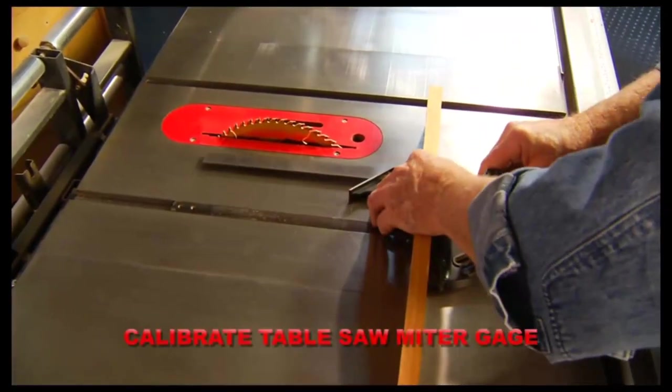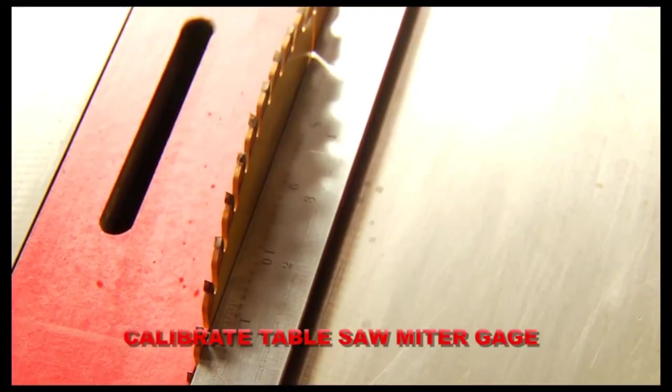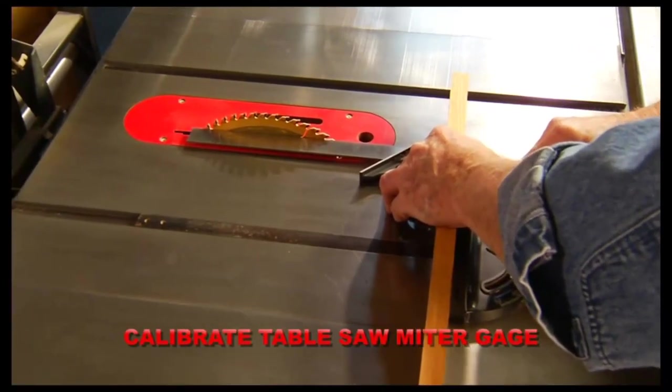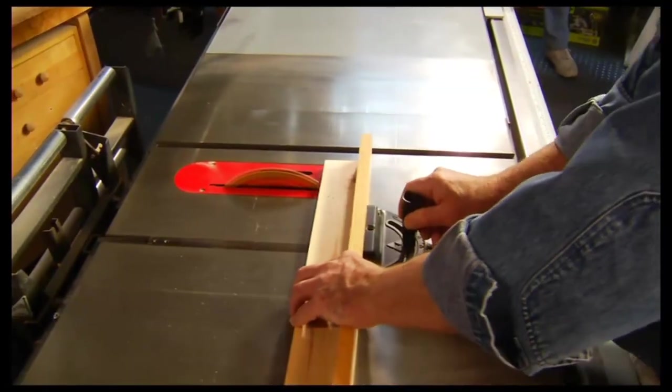To make accurate cross cuts, a table saw miter gauge must be set perpendicular to the blade. Another job for the combination square.